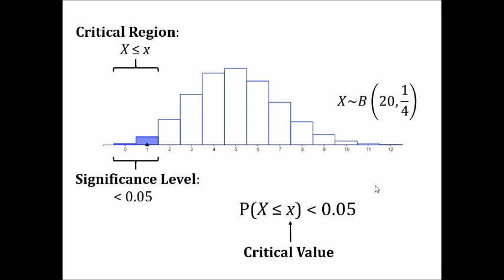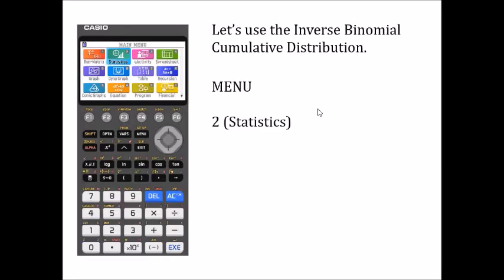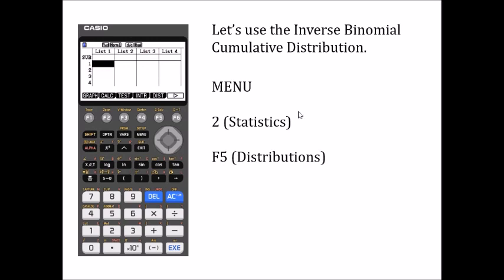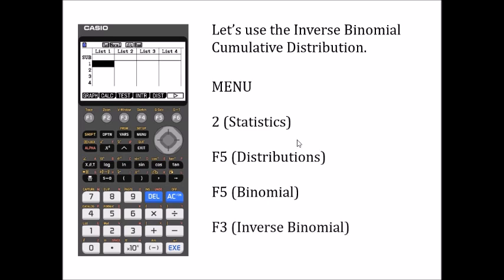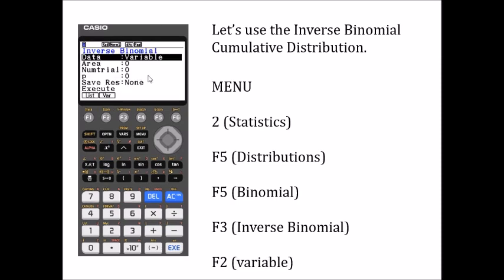We're going to use the Casio graphic calculator to do that. First go to the menu screen and press 2 for statistics, then F5 for distributions, F5 again for binomial, F3 for the inverse binomial, and then F2 for the variable option. Once you've done that you should see this screen with 'variable' in the data tab at the top, and you need to fill in the values.